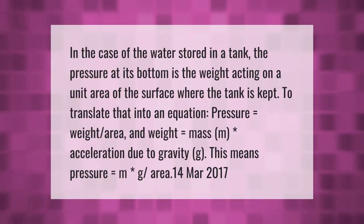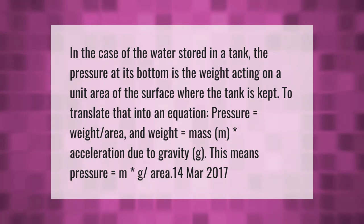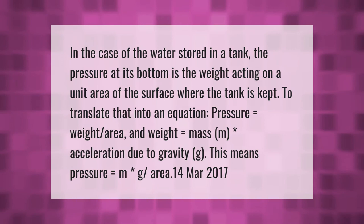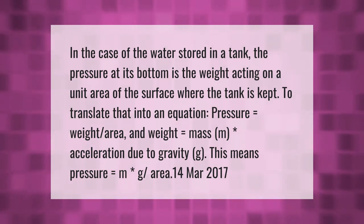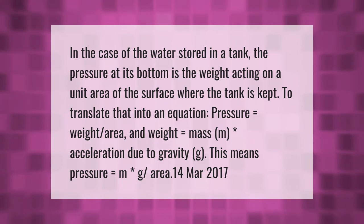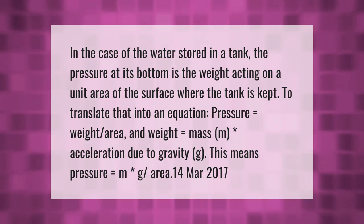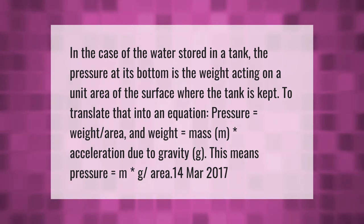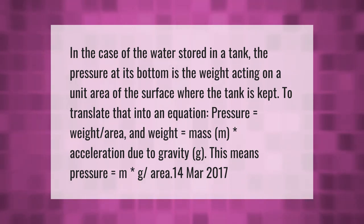In the case of water stored in a tank, the pressure at its bottom is the weight acting on a unit area of the surface where the tank is kept. Translating that into an equation: pressure equals weight divided by area, and weight equals mass (m) multiplied by acceleration due to gravity (g). This means pressure equals m times g, divided by area.